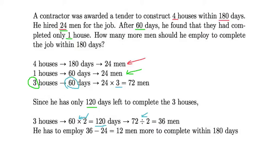So with 36 men total, that's the number of men he has to hire. Since he has already hired 24 men, 36 minus 24 is 12. So 12 more men are needed to complete the houses within 180 days.